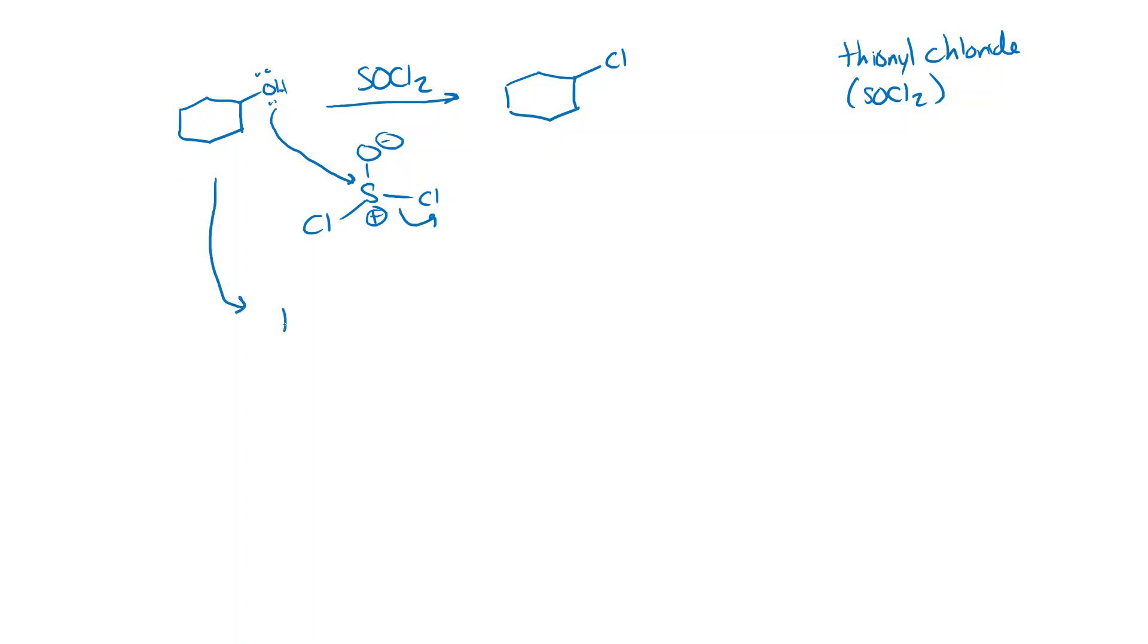Now this looks awful because we got too many charges around here. If you want to draw this as an expanded octet, that's totally fine. But the point is, this whole thing is a good leaving group because we have this positively charged oxygen. That's going to make a nice stable leaving group once it's left. And we do an SN2 reaction again and make the chloride.